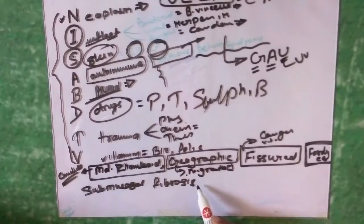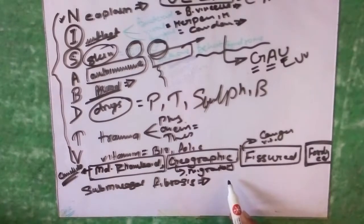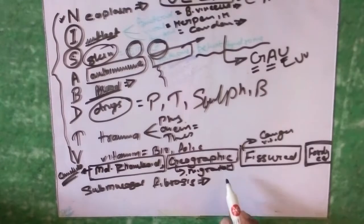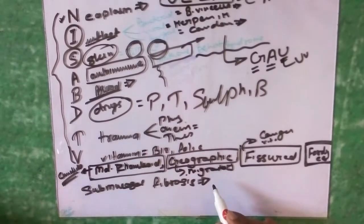Now coming to a very important topic in the context of India, that is oral submucous fibrosis. Submucous fibrosis is characterized by juxta-epithelial deposition of fibrous tissue underneath the submucosal layer, which was described in 1953 by Joshi.